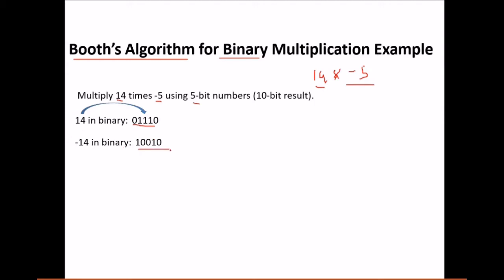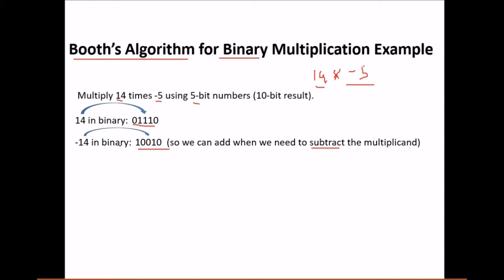So this is minus 14. When we need to subtract the multiplicand, we are not going to subtract directly — since there is no subtraction operation, we add the two's complement. So we find the two's complement of 14. Now, minus 5 in binary is 1 1 0 1 1.